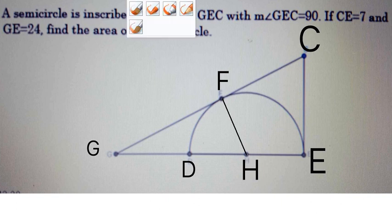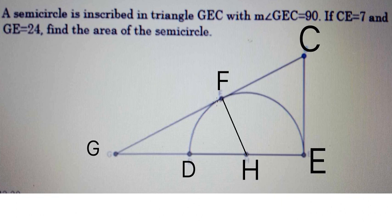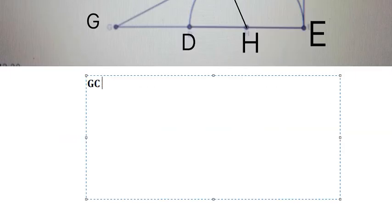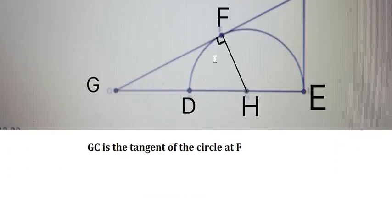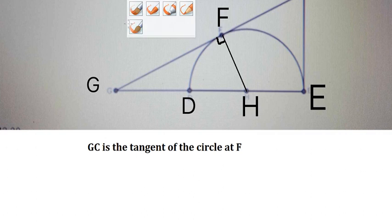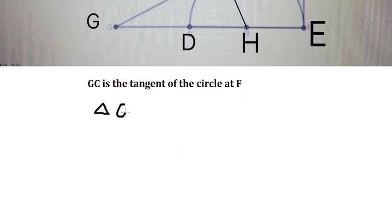We know that this angle should be 90 degrees because GC is the tangent of the circle at F. So we have 90 degrees here. Let's consider triangle GHF and triangle GEC.